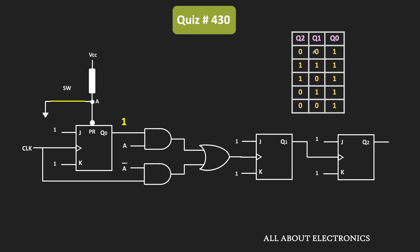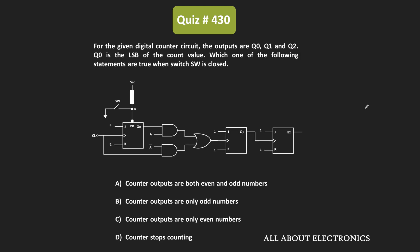So in this condition, these are the counts of the counter. Let us write the decimal equivalent of each count. So 001 corresponds to 1, 111 corresponds to 7, 101 corresponds to 5, while 011 corresponds to 3, and once again the count will go to 001, which corresponds to 1. So if you see the count of the counter, then each count represents an odd number. So from this we can say that when the switch gets closed, then the counter will count only the odd numbers. And whenever the switch is in the open condition, then it will count both odd and even numbers.